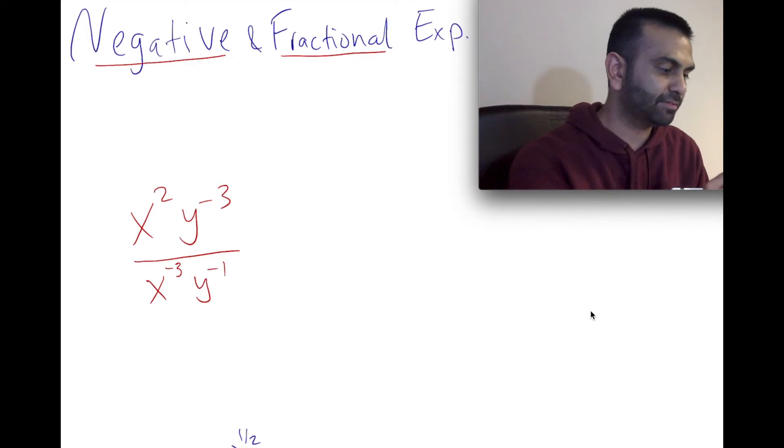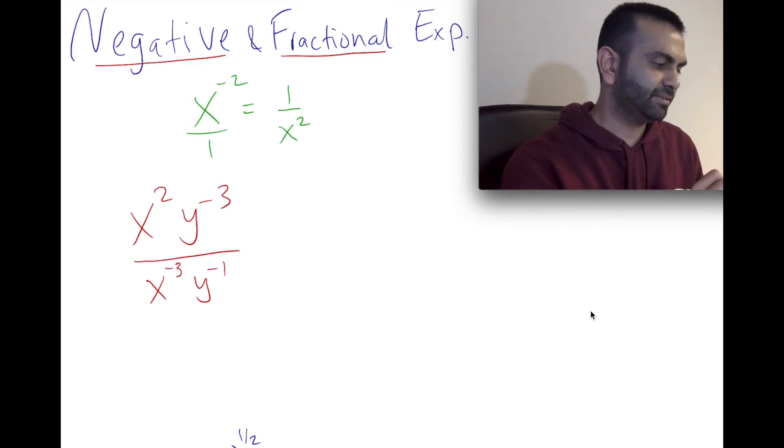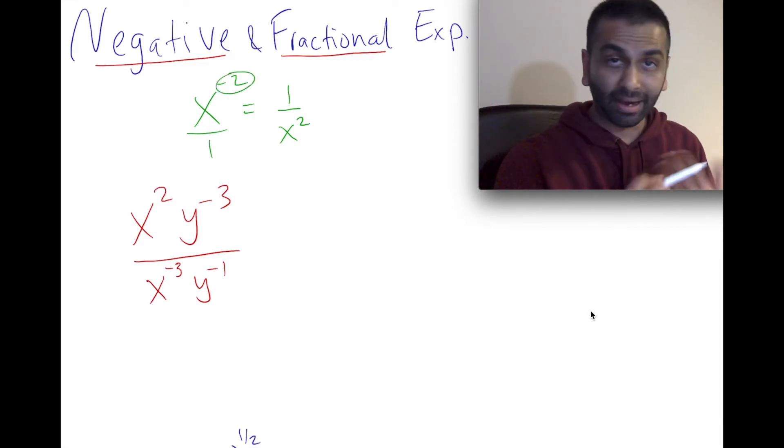So for example, if the question just says simplify x to the negative second power, well, that's just saying 1 over x squared. The best way to think about it is there's sort of this imaginary line with the denominator of 1, because anything divided by 1 is itself.